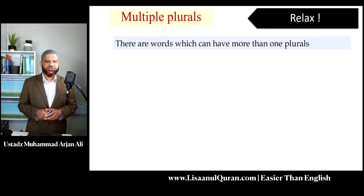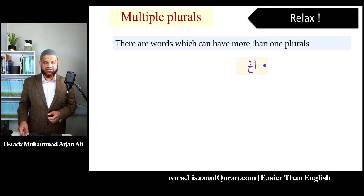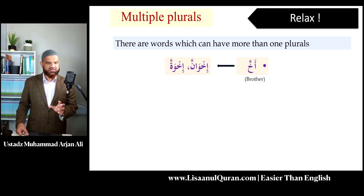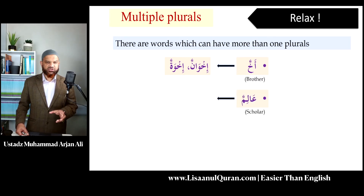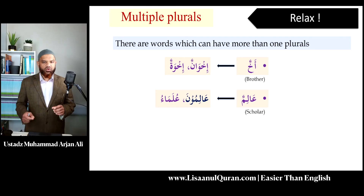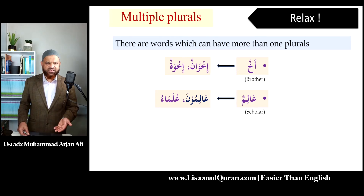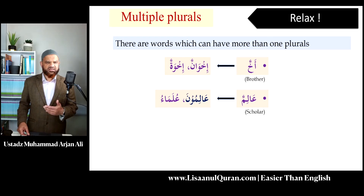One more point — and I want you to relax over this one. Arabic is a very rich language. Please do not be surprised that certain words have many plurals. For example, 'akhun', brother — its plural is either 'ikhwan' or 'ikhwa'. So one word can have more than one plural. Another example: 'alim', scholar — you can make it into the sound plural 'alimoona/alimeen', but it also has a broken plural 'ulama'u'. A word can have multiple plurals in Arabic — it's not uncommon.